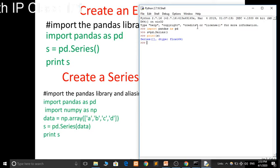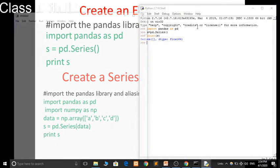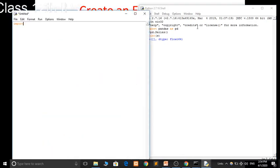s is equal to pd.series, hit enter, and then print s. So here the index is null.